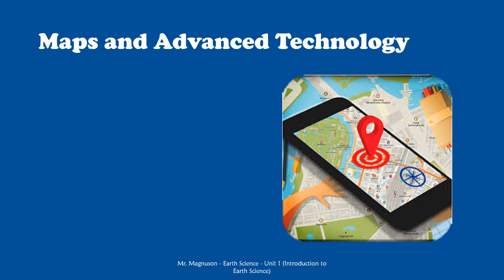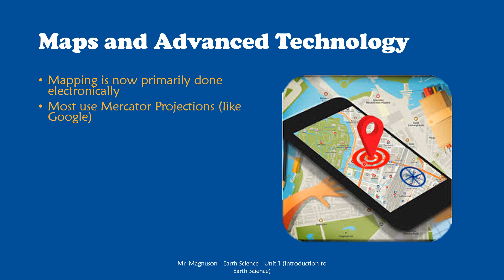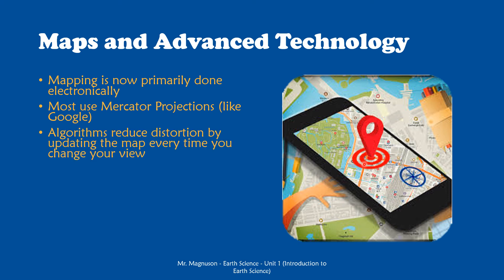The last thing we're going to talk about today is maps and advanced technology, making this more relevant to our everyday lives. Most of you aren't walking around with a paper map in your pocket — you're walking around with a cell phone. Mapping is now primarily done electronically, whether it's on your phone, a handheld dedicated mapping device, or a computer. Most electronic maps use Mercator projections to display things on a flat screen, but they get around the distortion issue by only showing you a small portion of the map at a time. Every time you move the map, they recalculate it so the center is always crisp and distortion at the edges is minimized.